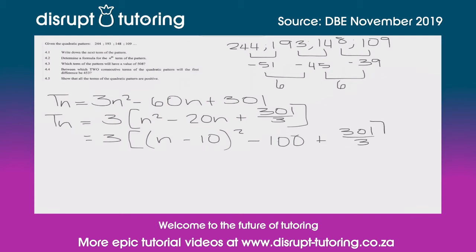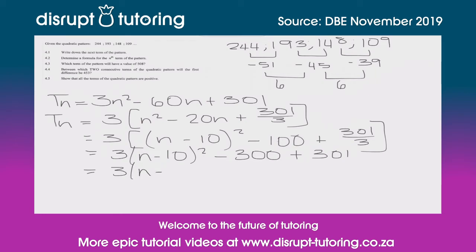So we subtract the square of that second term, plus 301, over 3. Multiplying back in, that gives us 3(n − 10)² − 300 + 301. And finally, 3(n − 10)² stays the same, and −300 + 301 gives us +1.